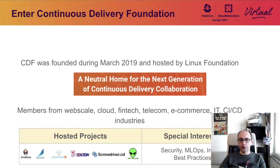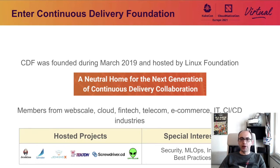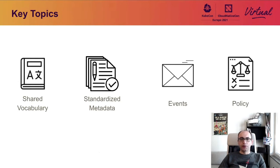The Continuous Delivery Foundation was founded during March 2019 and is hosted by the Linux Foundation, providing a neutral home to collaborate for the next generation of Continuous Delivery. It provides a home to various open source CI/CD projects such as Jenkins, JenkinsX, Spinnaker, Tekton, Screwdriver CD, and Otelius. In addition to hosting projects, it facilitates the creation of special interest groups and working groups for community members to collaborate on various topics within Cloud Native Continuous Delivery. There are currently five special interest groups: security, MLOps, interoperability, best practices, and end-users.